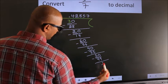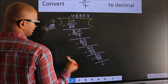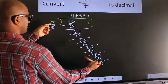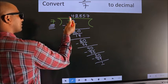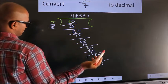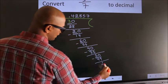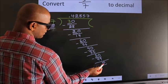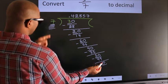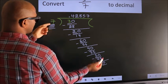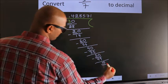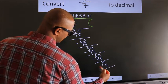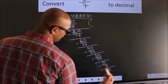Here we have 1, here 7. We already have the decimal, so we can directly take 0 — so 10. A number close to 10 in the 7 table is 7 ones 7. Now we subtract. We get 3.